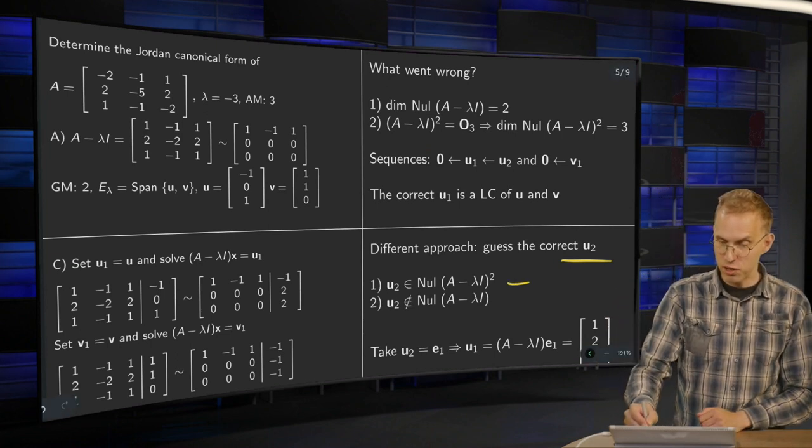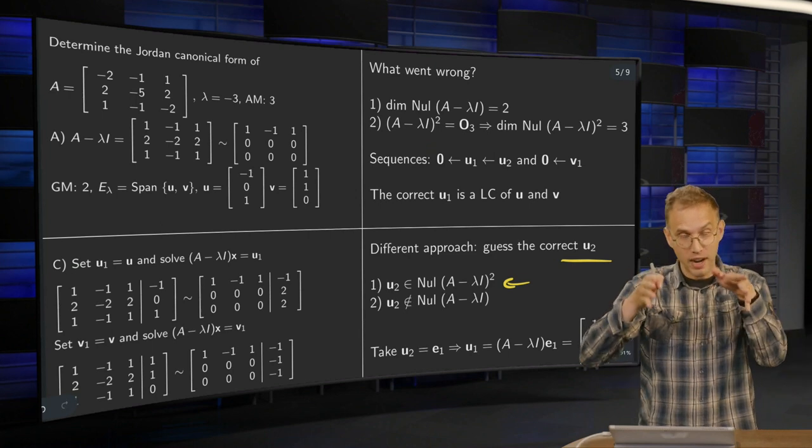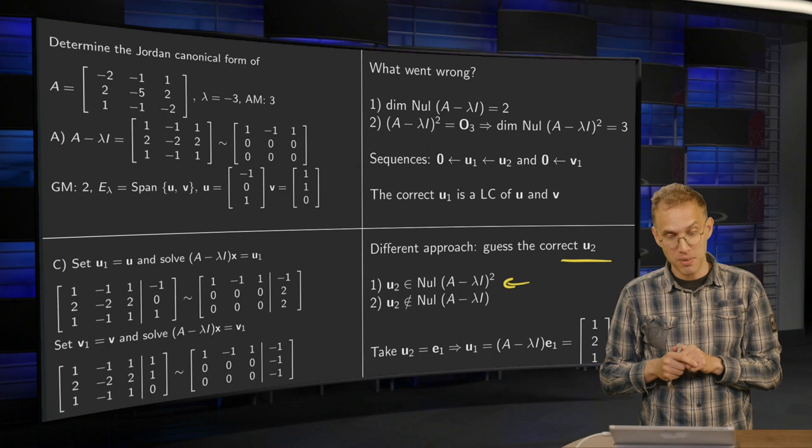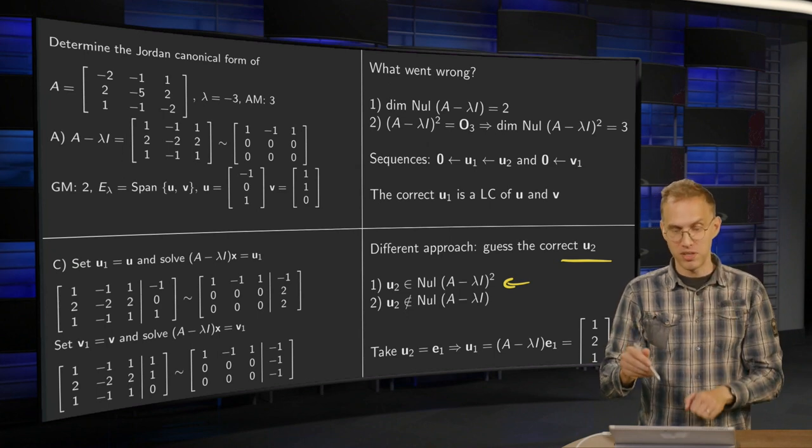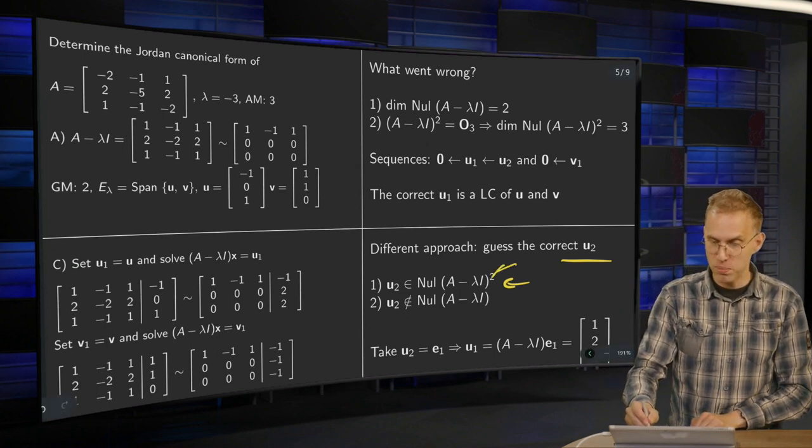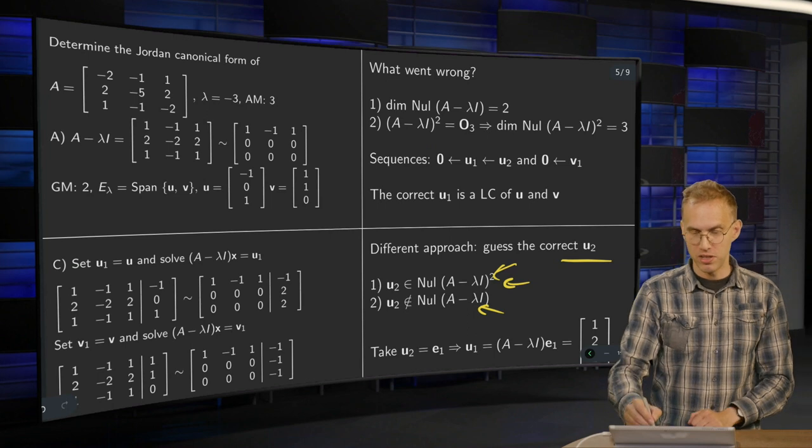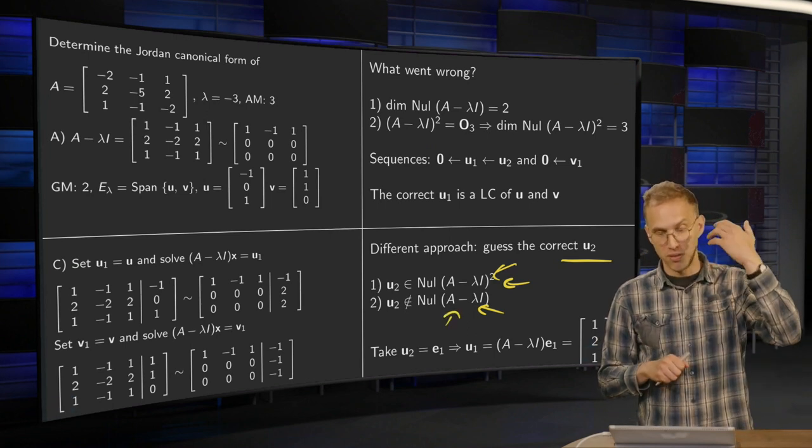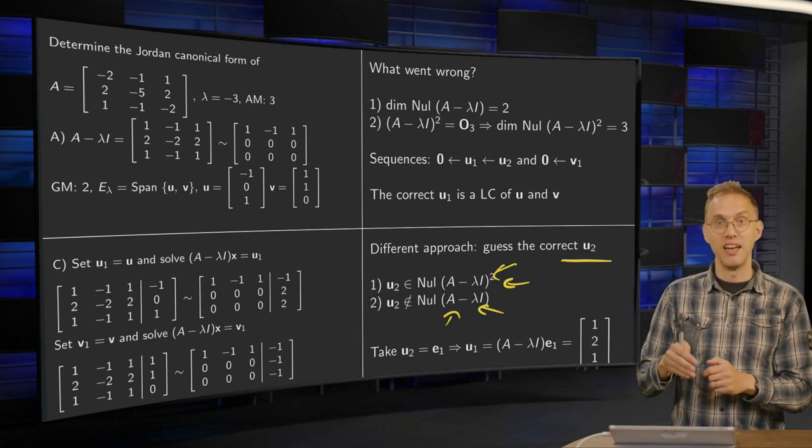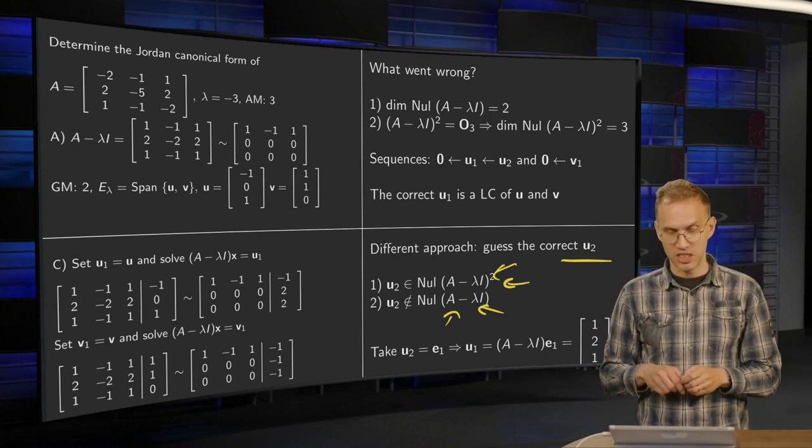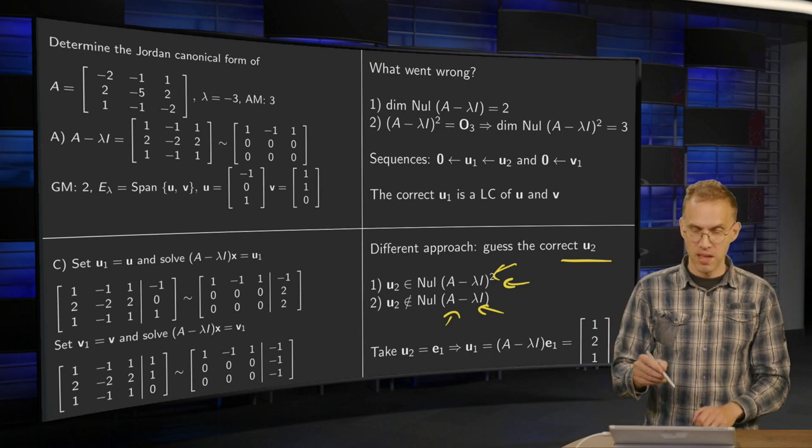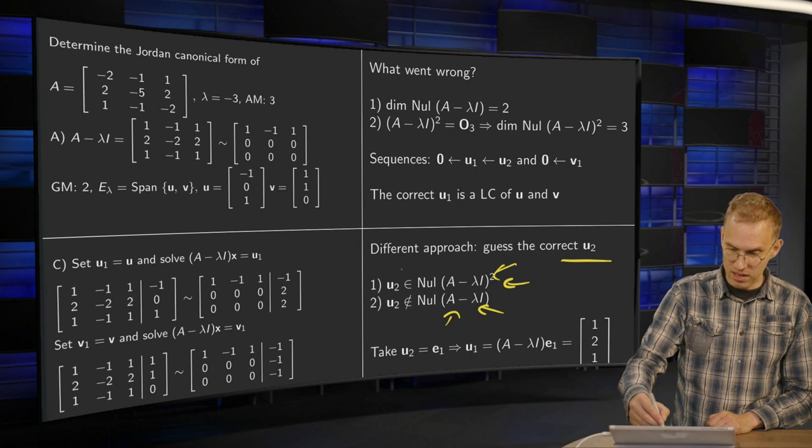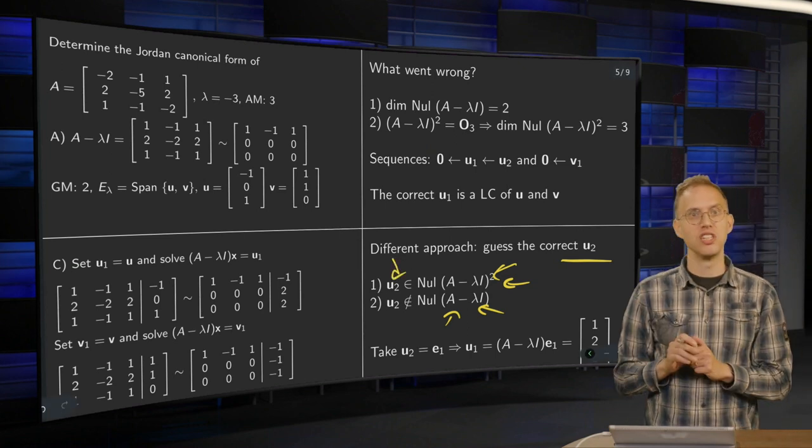Okay, u_2 has to be in null space of (A minus lambda I) squared, but it's not allowed to be in the null space of (A minus lambda I). So your endpoint has to be somewhere in this null space but not in that one. Well this one over here is the eigenspace. So you have to find some u_2 which is in the null space of the null matrix but not an eigenvector.